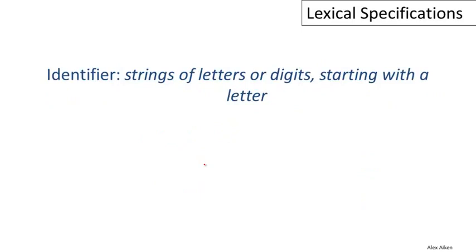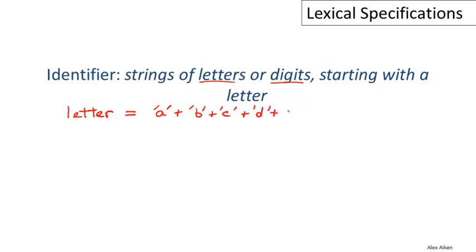Now let's look at yet another example, even more sophisticated. Let's think about how to define identifiers, which are strings of letters or digits that begin with a letter. We already know how to do digits, so let's focus on letters. We'll want to name it, so we'll say that 'letter' is a single letter. Now we have to write a regular expression for all the individual letters. That's straightforward but tedious — lowercase a, b, c, d — and as you can see, this is going to be a rather large regular expression with 26 lowercase and 26 uppercase letters.